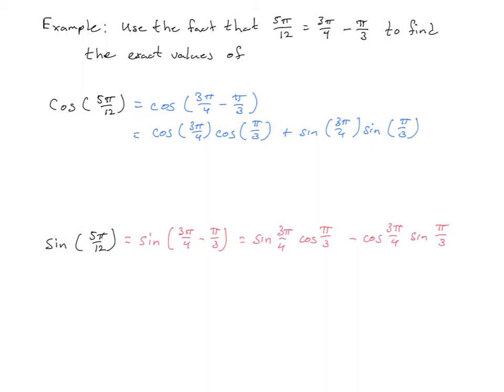Let's take a look at this example. We're going to use the fact that 5π/12 equals 3π/4 minus π/3 to find the exact values of both cosine of 5π/12 and sine of 5π/12. To do this we'll need the cosine difference formula and the sine difference formula. So cosine of 5π/12 equals cosine of (3π/4 − π/3), and by the cosine difference formula that's cosine of the first times cosine of the second plus sine of the first times sine of the second.